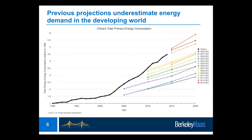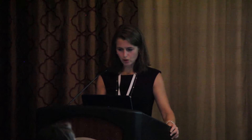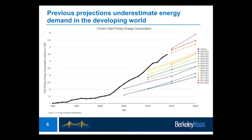I suspect that even that dramatic 85% growth projection for the developing world is an underestimate. This graph plots total quads of energy use normalized to 1990 consumption for China. The black line represents actual consumption, and by 2010 it's above three — meaning China's energy use more than tripled between 1990 and 2010. It just grew dramatically.